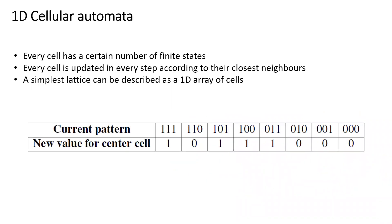We start by discussing one-dimensional cellular automata. Cellular automata is a kind of way of simulating systems. You have rules for the system for each cell according to itself and its neighbors. We look at what's happening at our lattice site and our immediate neighbors in order to decide what's going to happen in the next step. This is as simple as that.